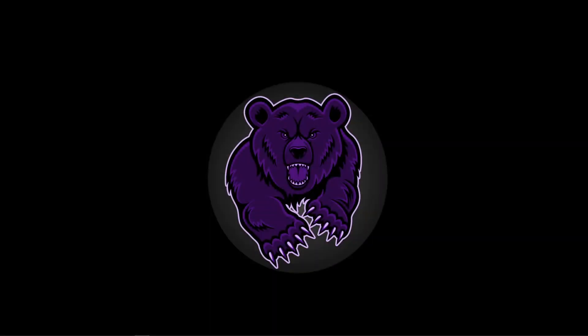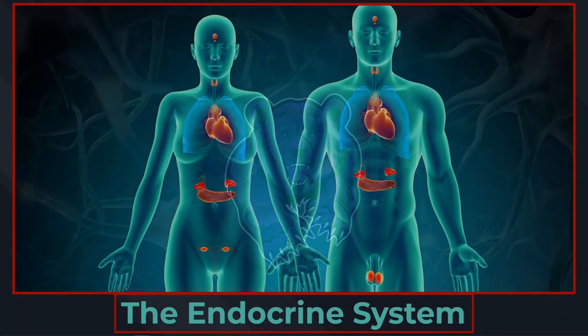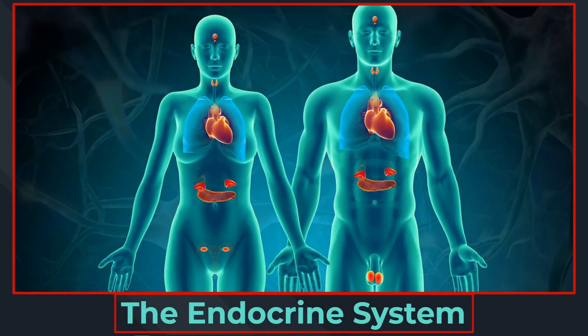What's up all my purple bears out there? Professor Hurley here bringing you another episode of Purple Bear Biology. In this video we are going to explore the basics of our endocrine system. This system has a dynamic impact on how our bodies maintain homeostasis and is one of my personal favorites because of the hormone pathways as well as how fluctuations influence overall health.